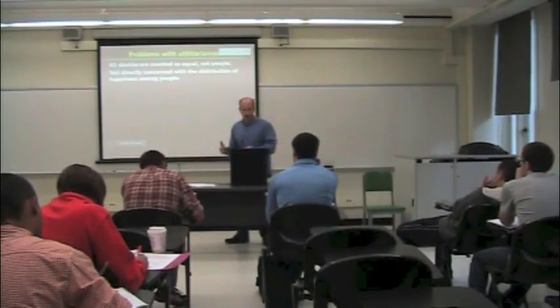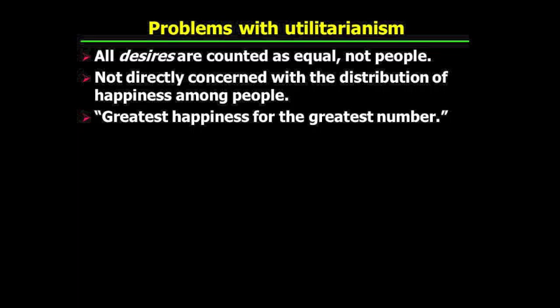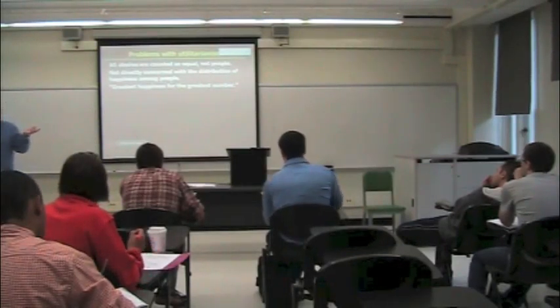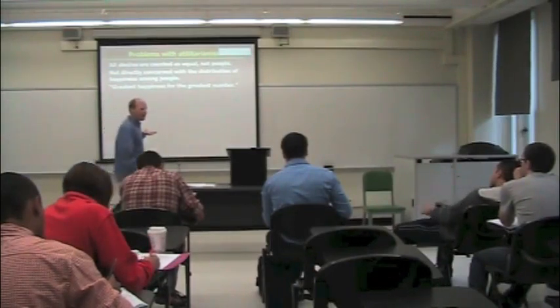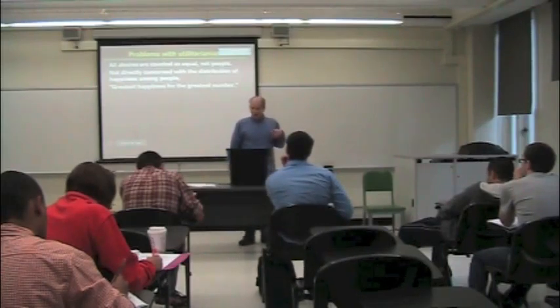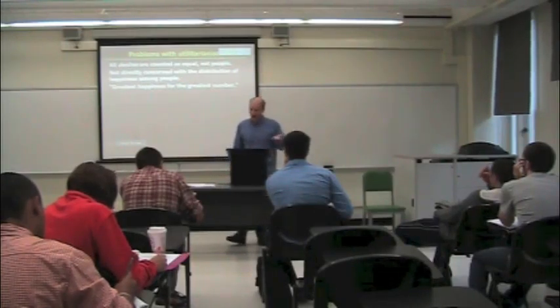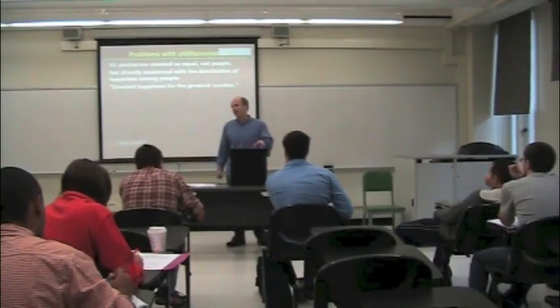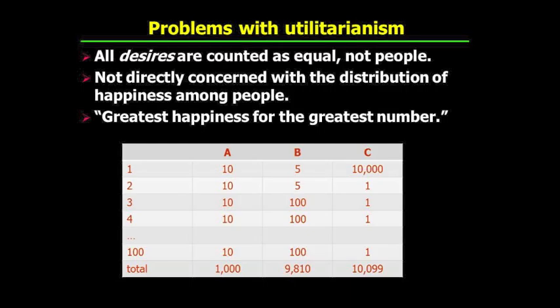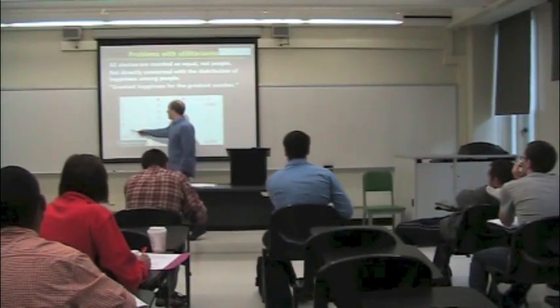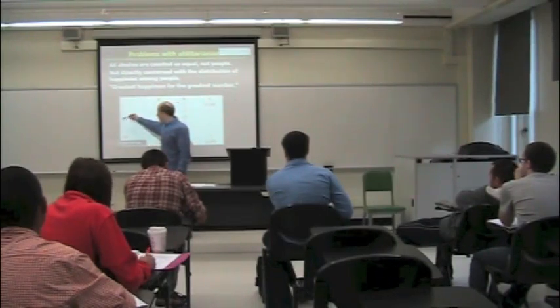So you may have heard the slogan, the greatest happiness for the greatest number, as a way of describing the alternative. But you can see now that this is ambiguous. It's ambiguous because the greatest number of people being happy might not be the way to make the greatest total amount of happiness. So here's the chart illustrating this. What we have here going down on the left side is a number of 100 people. Person 1, person 2, person 3, person 4, up to 100.